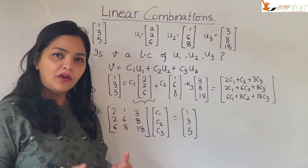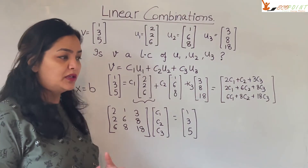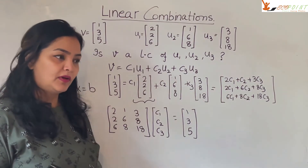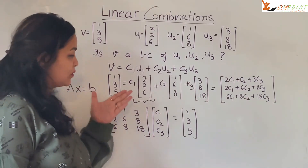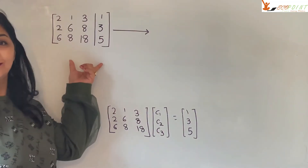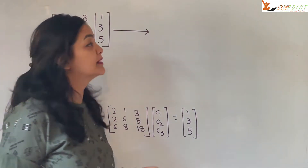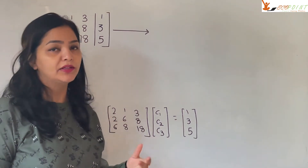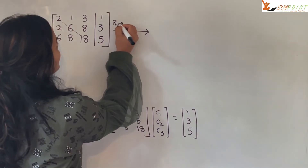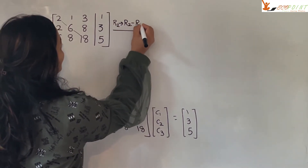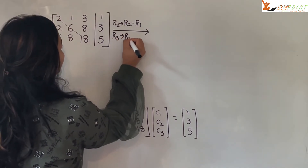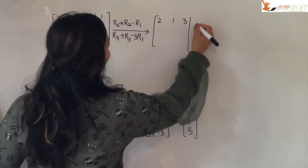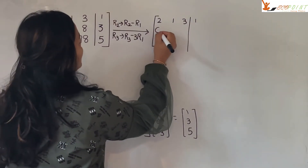It boils down to solving this system of equations and figuring out whether a solution exists. For a unique solution you can check the determinant — if the determinant is not equal to 0, you have a unique solution. Otherwise, solve the full augmented system using row operations. The first operations I'll use are: R2 → R2 − R1, and R3 → R3 − 3·R1.